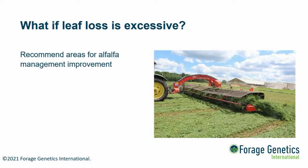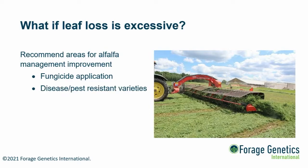Things you can do to prevent leaf loss include fungicide application, particularly during periods of high humidity; disease and pest resistant varieties; and harvest management — probably the biggest factor, which includes not turning windrows when they're too dry, meaning less than 40% moisture, as that will cause significant leaf loss.